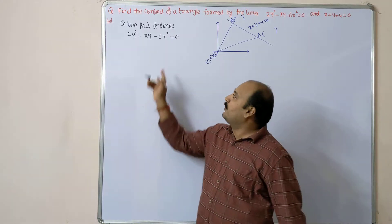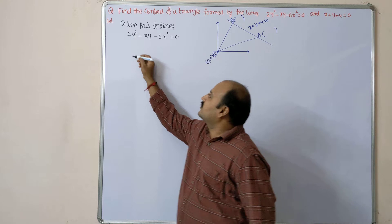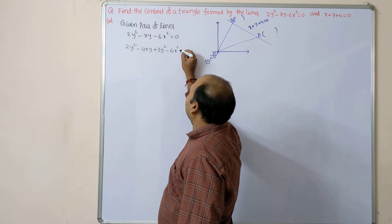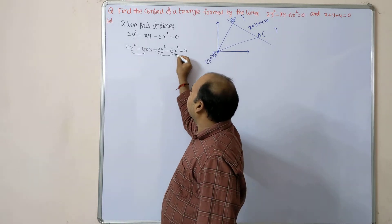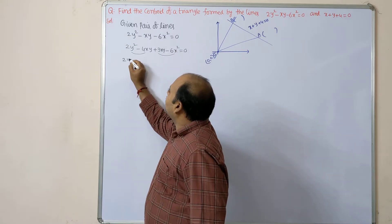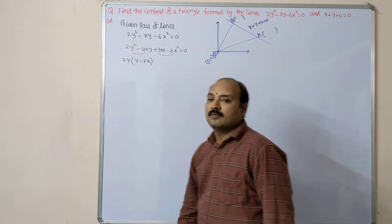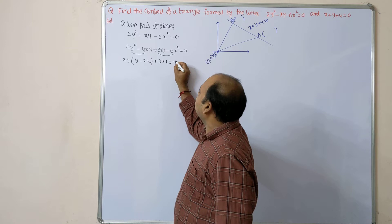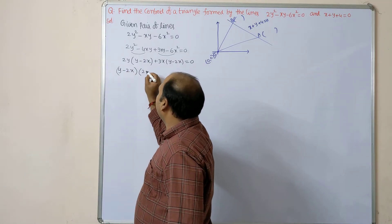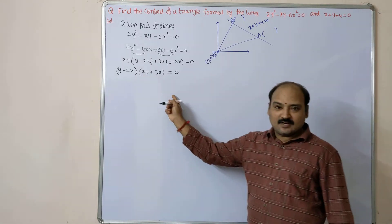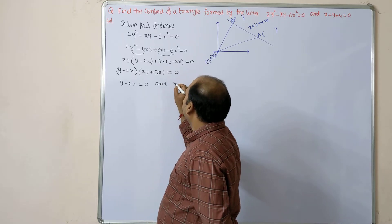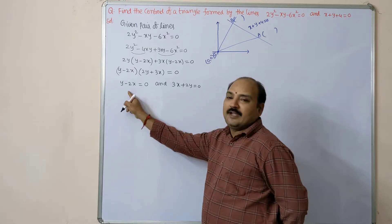We can write: 2y² - 4xy + 3xy - 6x² = 0. Factorizing: take 2y common from first two terms giving 2y(y - 2x), and take 3x common from next two terms giving 3x(y - 2x). Then taking (y - 2x) common: (y - 2x)(2y + 3x) = 0. So one line is y - 2x = 0 and the other line is 3x + 2y = 0.